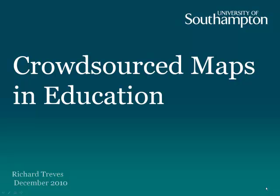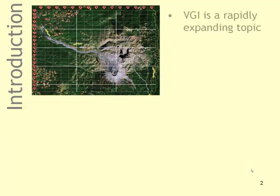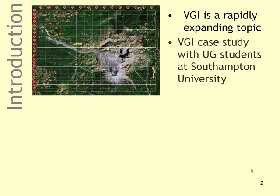Today I'm going to talk about Crowdsourced Maps in Education. This is also known as Volunteer Geographical Information, or VGI — that's how I'm going to refer to it. VGI is a rapidly expanding topic, and I'm going to talk about a case study with undergraduate students at Southampton University today.